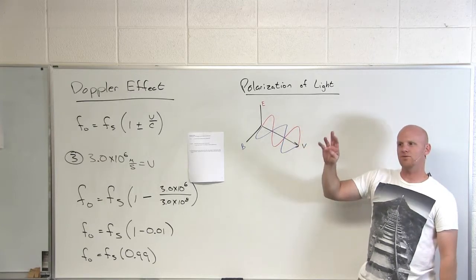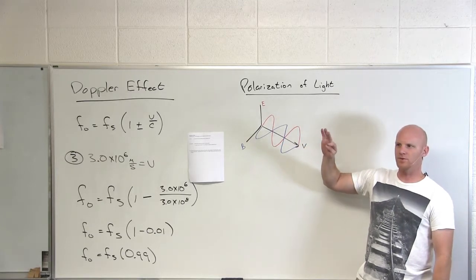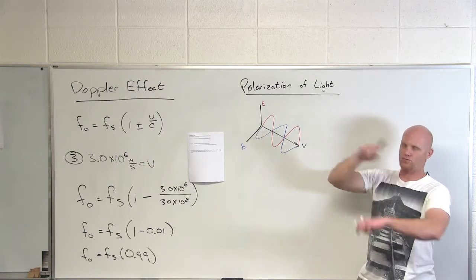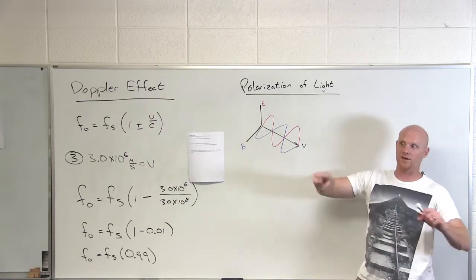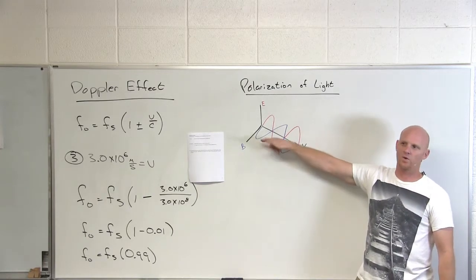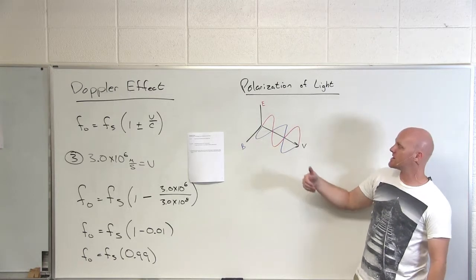So with the right hand rule, you remember where your fingers most often pointed in most of your right hand rules? Well, it depends on the right hand rule. In the ones we did, your fingers actually pointed with the magnetic field whereas your thumb usually went with the velocity or the current.